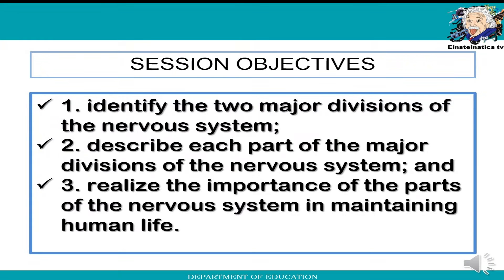For today's session objectives: first, we will identify the two major divisions of the nervous system; second, describe each part of the major divisions of the nervous system; and third, realize the importance of the parts of the nervous system in maintaining human life.